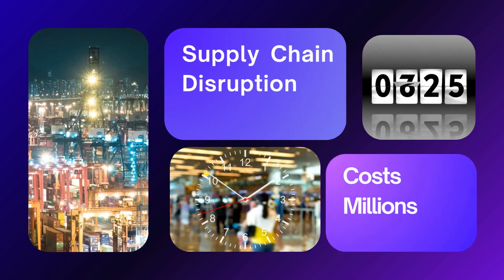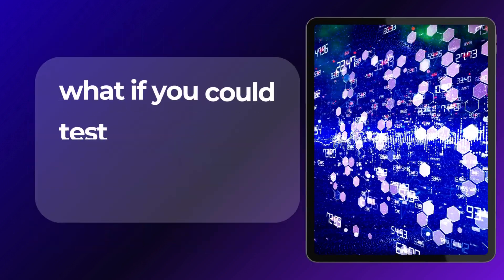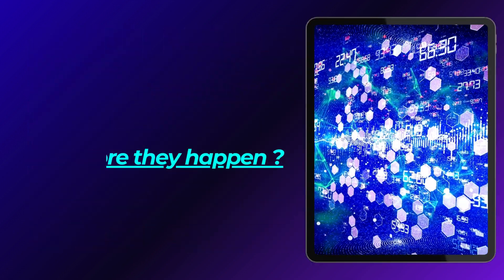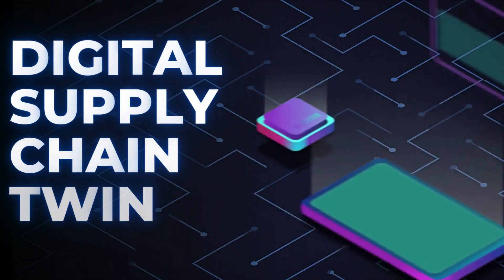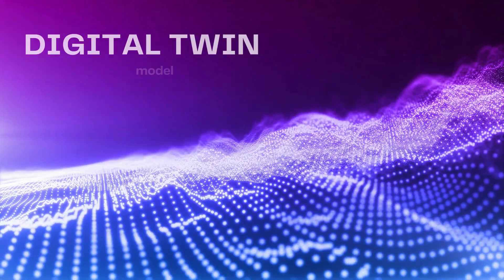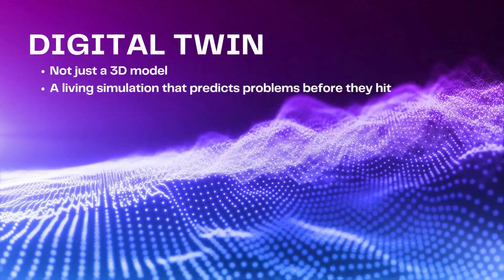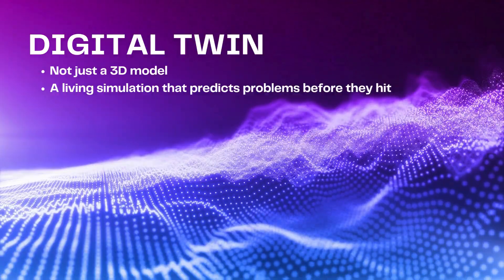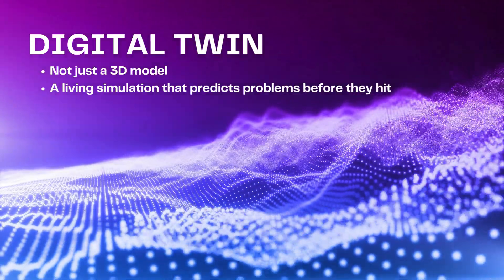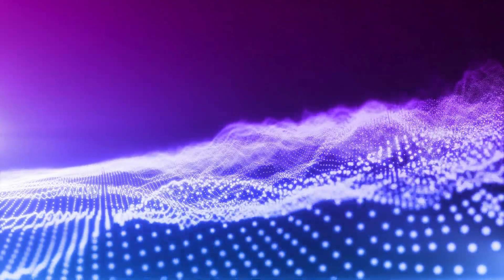Every supply chain disruption costs millions, but what if you could test your network against disasters before they happen? That's the power of a digital supply chain twin — not just a 3D model, but a living simulation that predicts problems before they hit your bottom line.